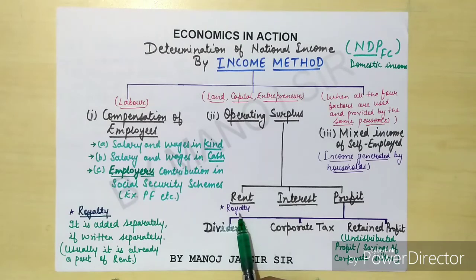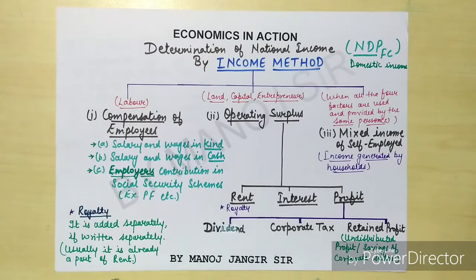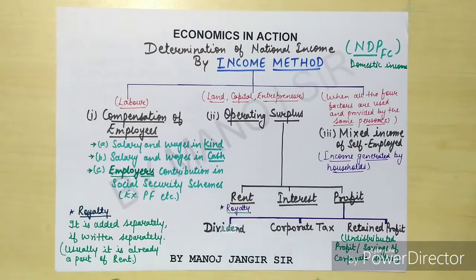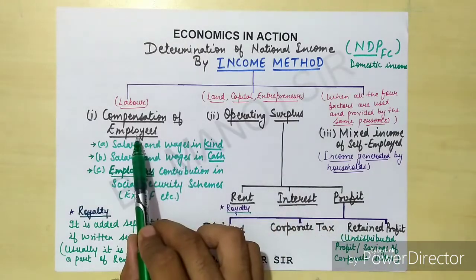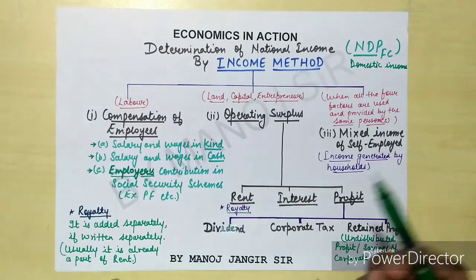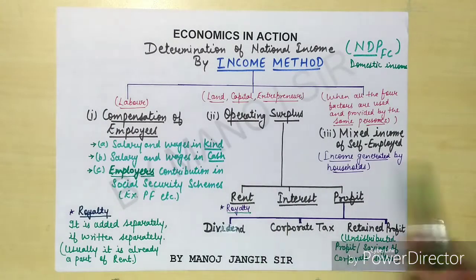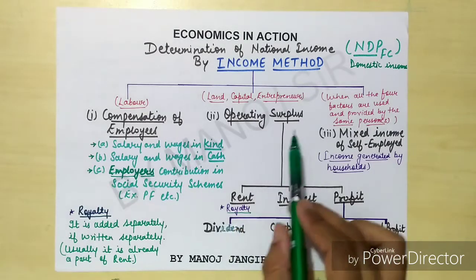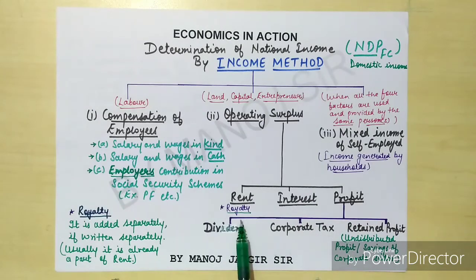One important thing: sometimes royalty is given along with rent. If royalty is written separately in the question and rent is also written separately, then royalty must be added separately. If royalty is written separately in the question, you add it separately. Usually it is already a part of rent, but if given separately, add it separately.